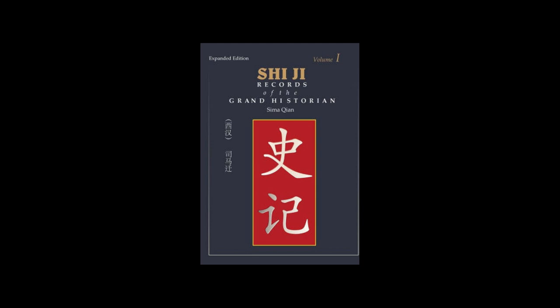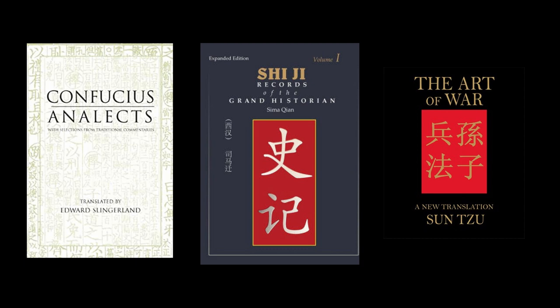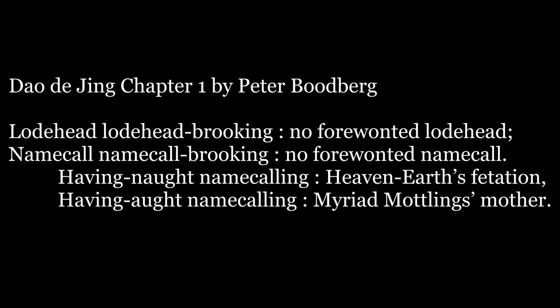Also necessary for a good translation is a good understanding of the specific context the work was created in and the general idea of the content. Classical works are often accompanied by commentaries to parse out names and meanings. As with any translation, one must decide somewhere between translating the perceived meaning of the text or the literal words. Holding to an extremely literal translation renders the text meaningless, as is the case for Peter Budberg's translation of the first chapter of the Tao Te Ching. And holding to an extremely liberal translation renders the text a whole different work altogether, as is the case of Stephen Mitchell's translation.